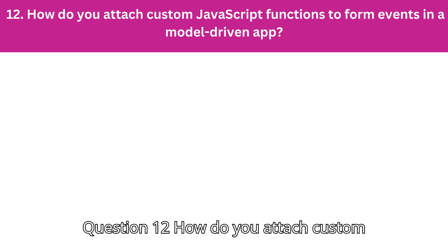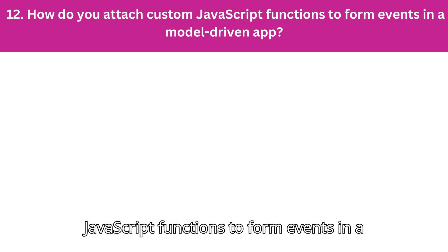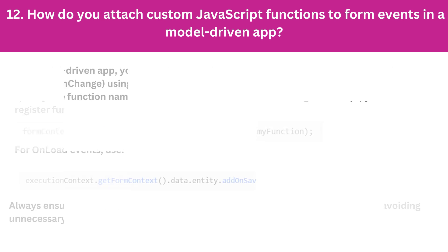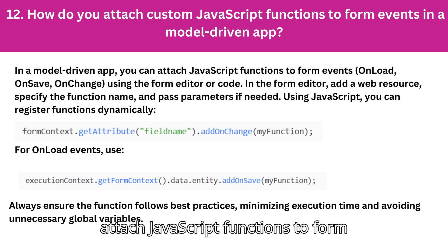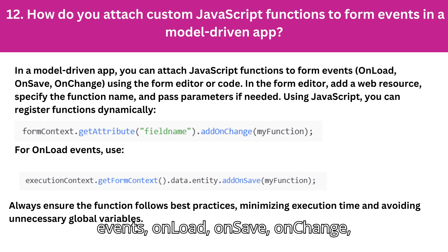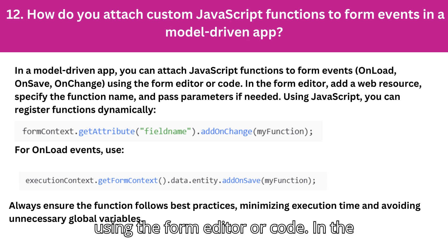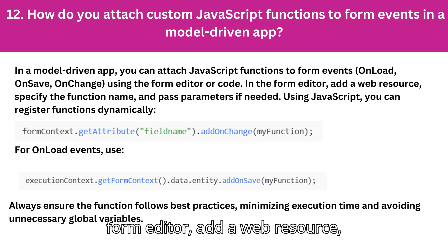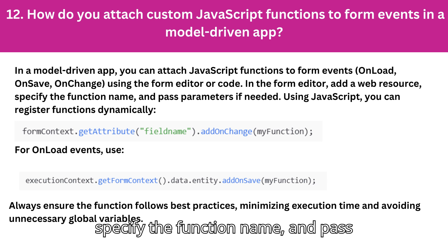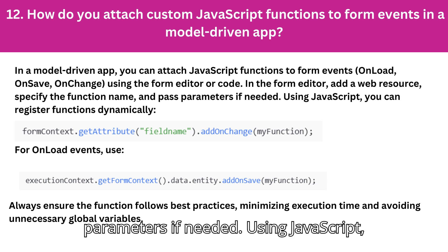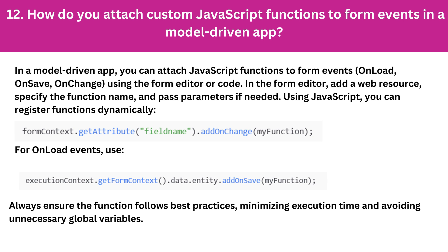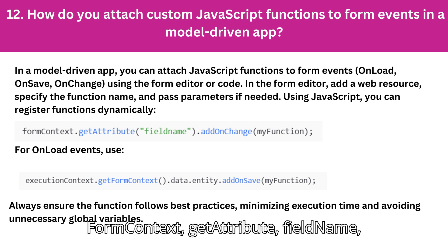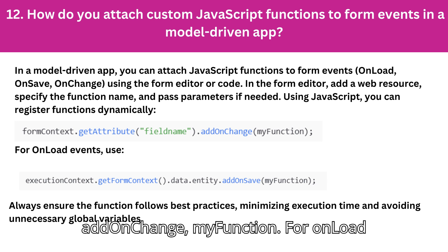Question 12: How do you attach custom JavaScript functions to form events in a model-driven app? In a model-driven app, you can attach JavaScript functions to form events — onload, onsave, onchange — using the form editor or code. In the form editor, add a web resource and specify the function name, passing parameters if needed. Using JavaScript, you can register functions dynamically: formContext.getAttribute(fieldName).addOnChange(myFunction).